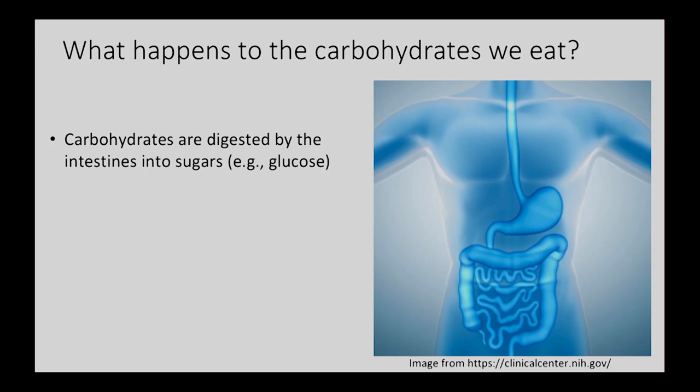So what happens to carbohydrates when we eat them? Say you're eating an apple — it's mostly carbohydrate. You're going to start chewing it, and in your mouth there are actually enzymes or chemicals that help to start breaking down that apple. Your teeth also do a mechanical sort of breakdown of the apple.